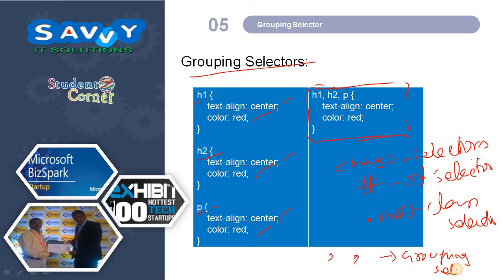In the entire CSS we use any combination — normal selector, ID selector, class selector, or grouping selectors — to give more look and feel to our HTML tags. Thank you. In the next video we will practically demonstrate selector tags, ID selector, class selector, and grouping selector with practical experience. Thank you.